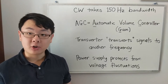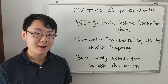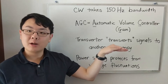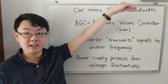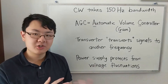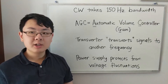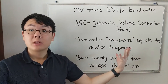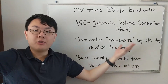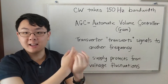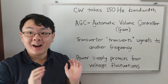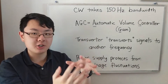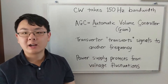A mixer is used to convert frequencies to other frequencies. If you have a signal at 21 MHz and you want it at 28 MHz, you use a mixer. The mixer works by taking the radio signal you want to convert and combining it with another signal of a different frequency. Mixing the two signals together creates a new signal with the desired frequency. That's how a mixer converts radio signals to different frequencies.